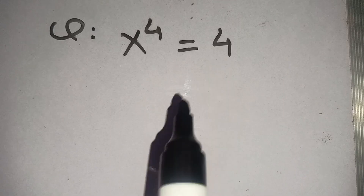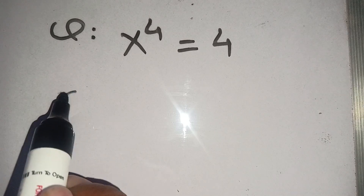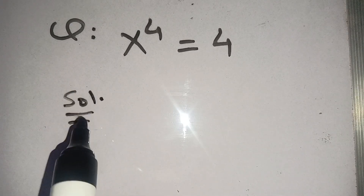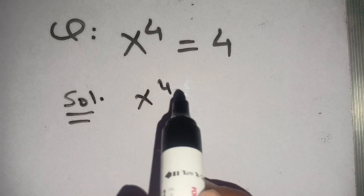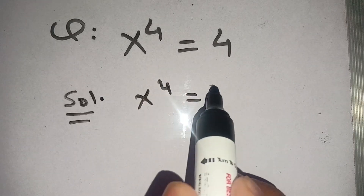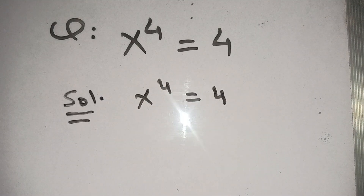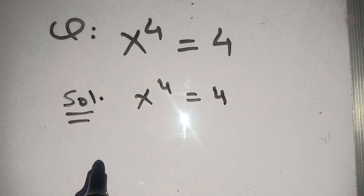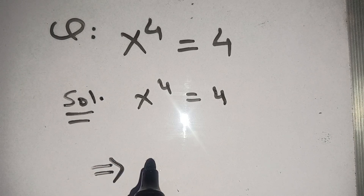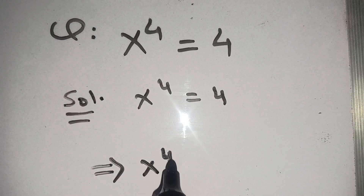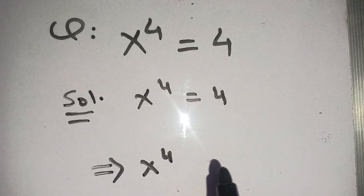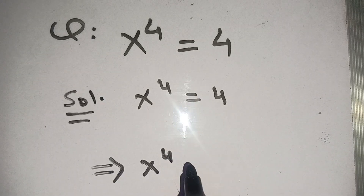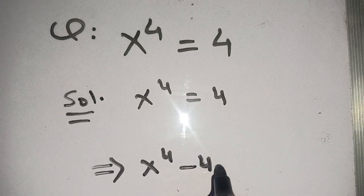Now let us solve the next problem: x power 4 is equal to 4. When we shift 4 from the right-hand side to the left-hand side it will become x power 4 minus 4 is equal to 0.